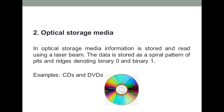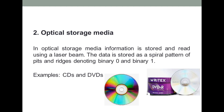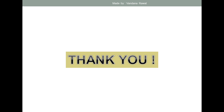The next type of storage media is optical storage media. In optical storage, a laser beam is used to read and write the data. The data is stored as a spiral pattern of bits, with pits and lands denoting zero and one. Examples of optical storage media are CDs and DVDs. As you can see in the pictures, data is written using a laser beam. The difference between them is that a CD has less storage capacity, while a DVD can store data in GB — much more than a CD.